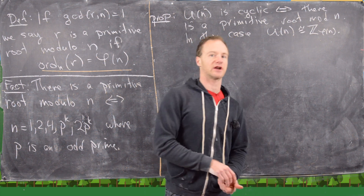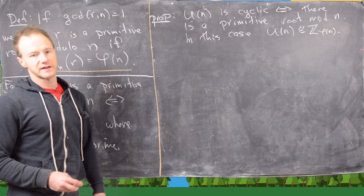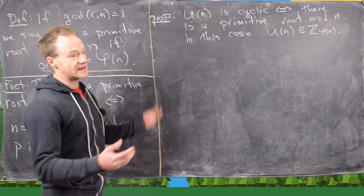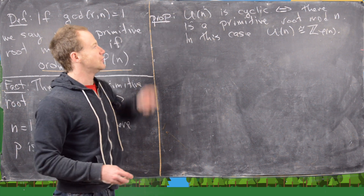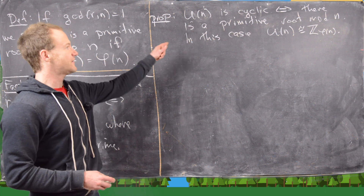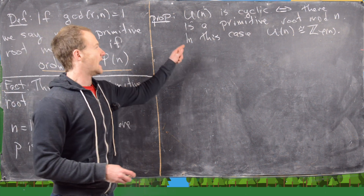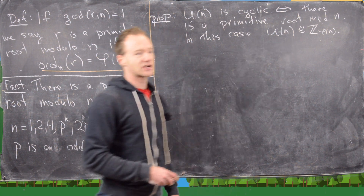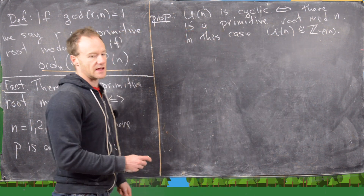There is a primitive root modulo n if and only if n is in the following list: n is 1, 2, 4, p to the k, or 2 times p to the k where p is some odd prime. Those are the only cases when a primitive root exists. And U(n) is cyclic if and only if there is a primitive root mod n.